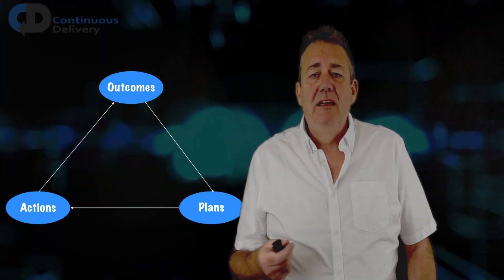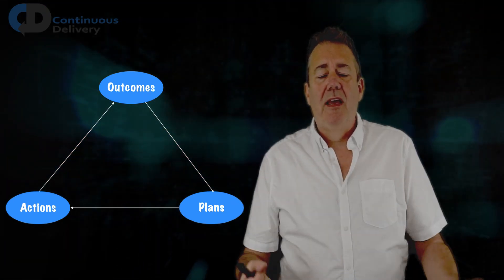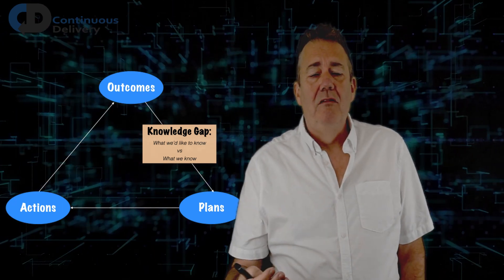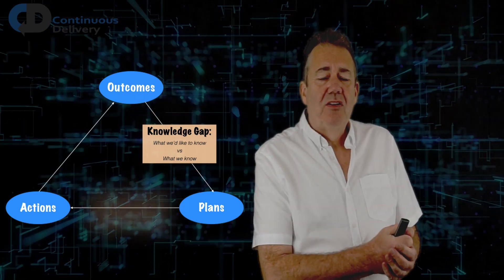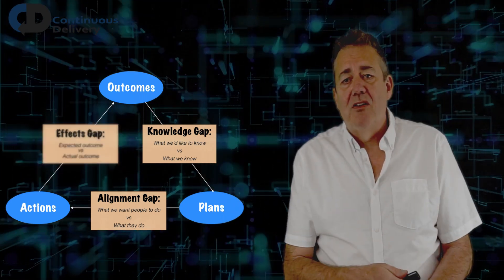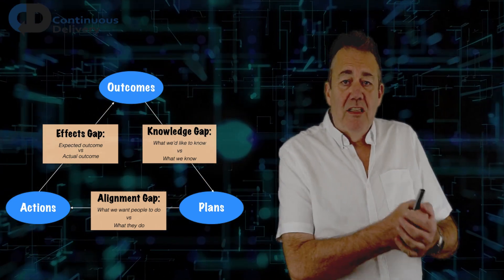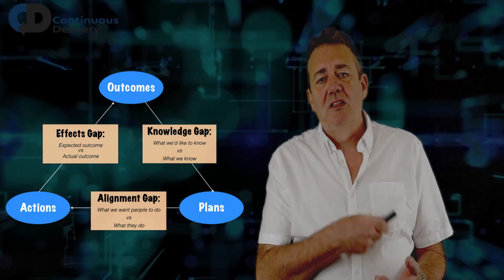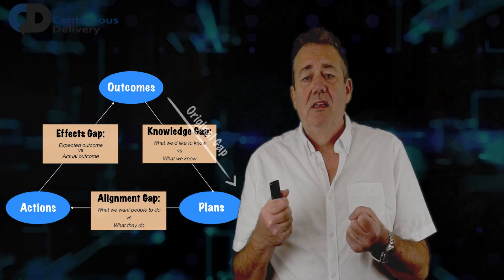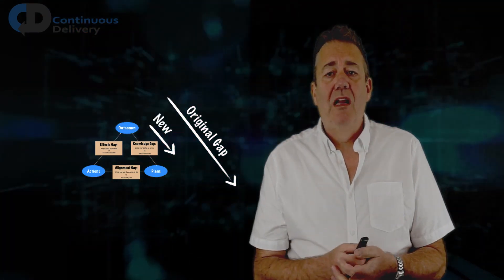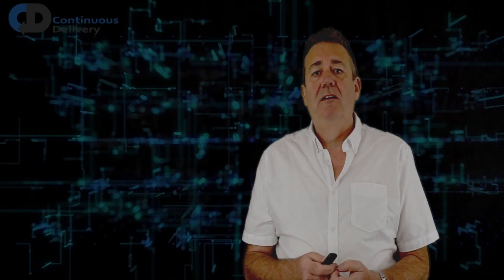So how do we manage those gaps? In his lovely model from Stephen Bungay's book, he comes up with this picture. So between outcome and plan is the knowledge gap, the gap between what we'd like to know versus what we actually know. And then between the plan and the action, there's the alignment gap. There's the what we'd like people to do versus what they actually do. And then finally between actions and outcomes, there's the effect gap. The difference between the expected outcome, the thing that we planned for, and the actual outcome. One way of thinking about improving the speed and efficiency of feedback is that we're going to shrink these gaps. We can't eliminate them, but we can reduce them by going around the cycle more quickly and make each of the steps between outcome, plan and action smaller.